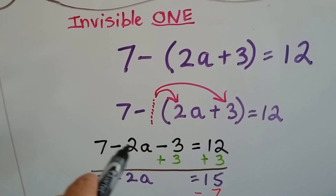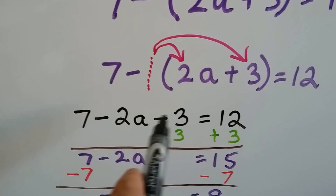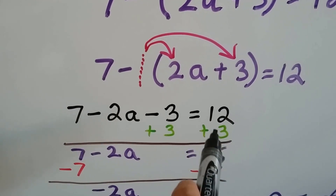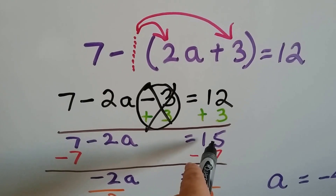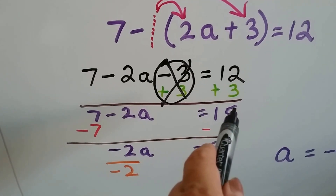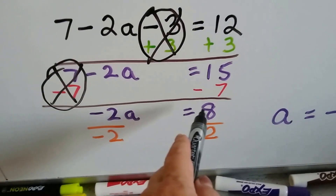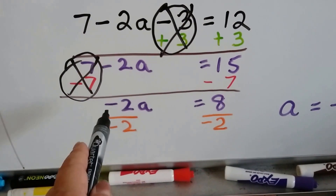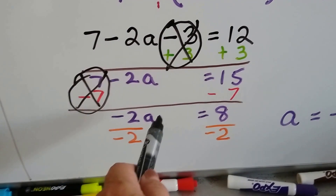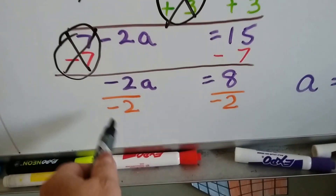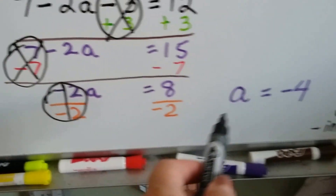That gives us negative 2a and negative 3. So our equation now says 7 minus 2a minus 3 equals 12. We can add 3 to the negative 3 and to the 12 on each side — that gets rid of the negative 3 and 12 becomes 15. Now we've got 7 minus 2a equals 15. We subtract 7 from both sides to create a zero pair — that makes 15 become 8. Our equation says negative 2a equals 8. Because this is multiplication, we divide both sides by negative 2. There's the invisible 1 again. We get 1a, and 8 divided by negative 2 gives us negative 4.